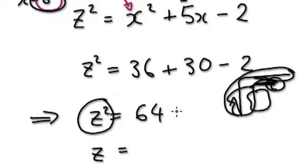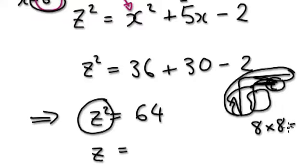So what's the square root of 64? Well, we know 8 times 8 is 64, so 8 is an answer.